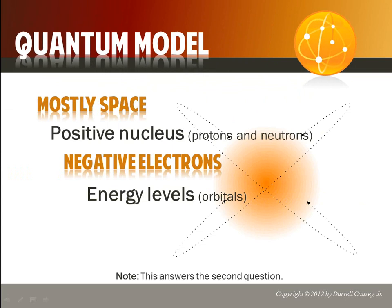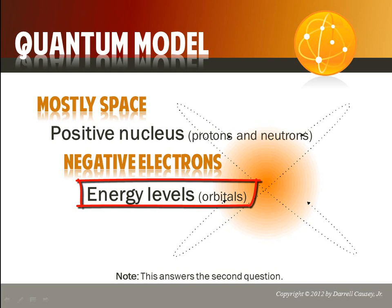The quantum model is mostly space. It has a positive nucleus — protons and neutrons inside — and negative electrons. Most importantly, we know these electrons are in energy levels, in orbitals, and we can determine where those orbitals might be according to quantum numbers. This answers the second question so that we can move into the third.